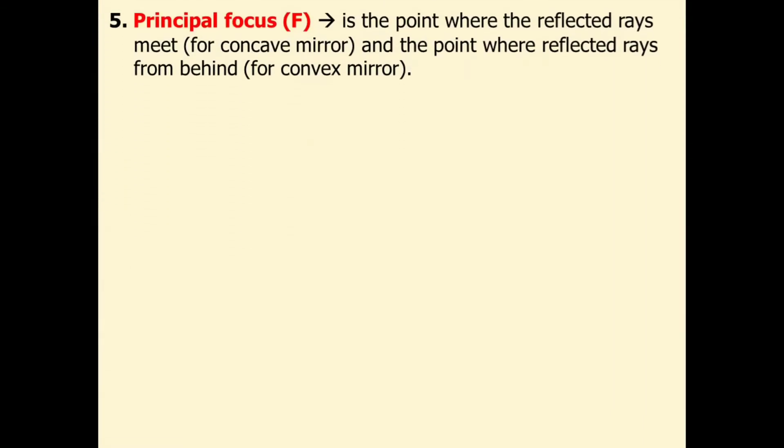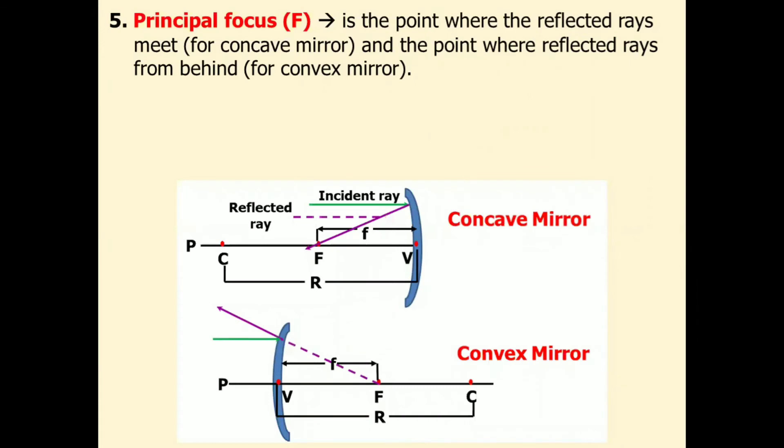The fifth one is the principal focus, represented by capital F. It is the point where reflected rays meet for concave mirror, and the point where reflected rays come from behind for convex mirror. In our ray diagram, this is our principal focus.